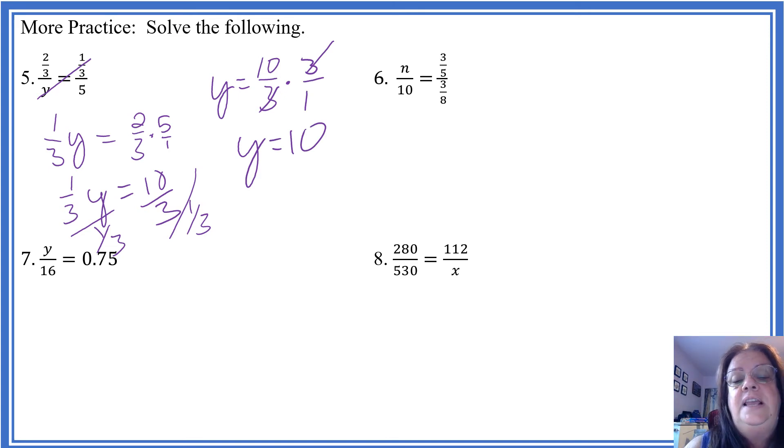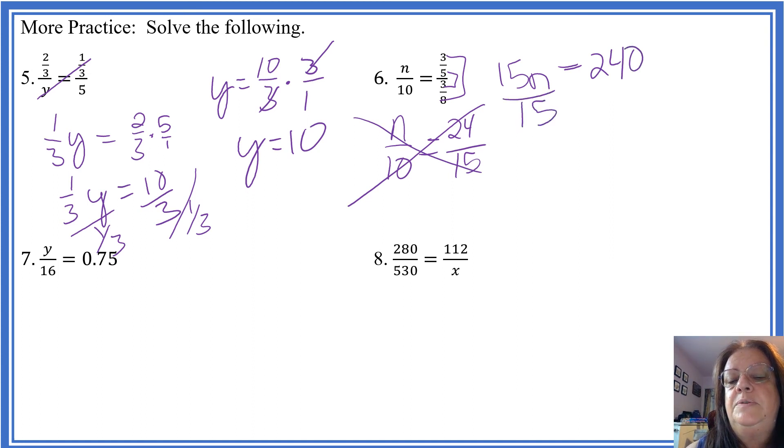Number 6. We're going to rewrite this. 3 times 8 is 24 over 5 times 3 is 15. Now we multiply 15n equals 240. We divide both sides by 15. And I think we get 16.